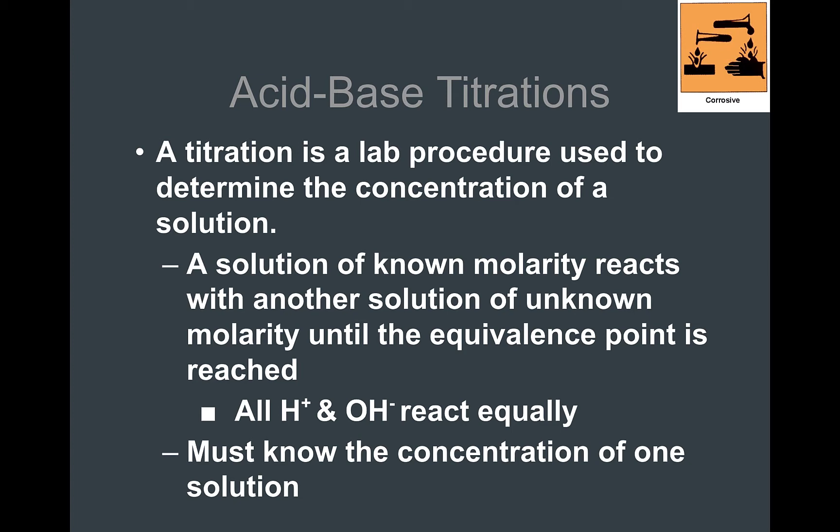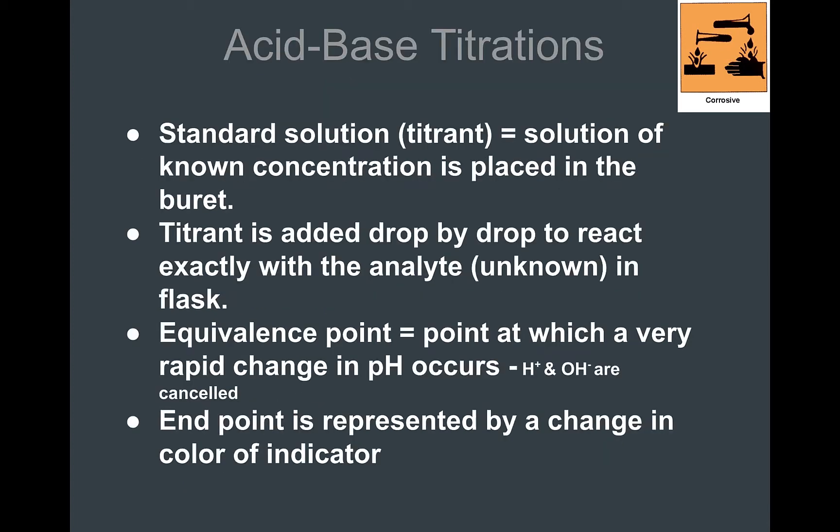In order for this to work, you have to know the concentration of one of the two substances. When you carry out a titration, you use a standard solution called a titrant, and this is the one that has the known concentration. This is placed in a piece of equipment called a burette, which is then added drop-by-drop to your unknown solution, which is in a flask or a beaker below the burette.